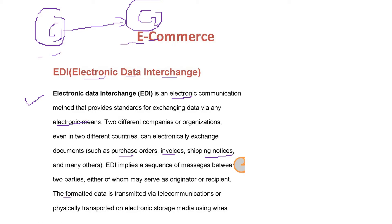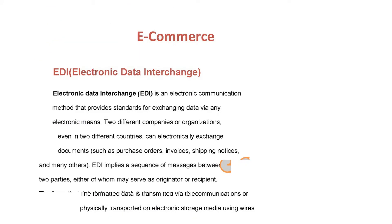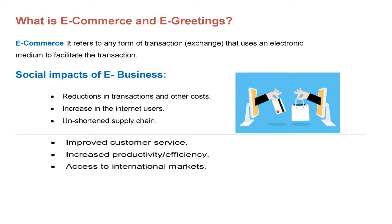The formatted data is transmitted via a network such as telecommunications, or it may be physically transported on electronic storage media using wires. E-commerce means doing commerce using electronics — any form of transaction or exchange where electronic media is being employed or used, and this is done to facilitate the transaction.